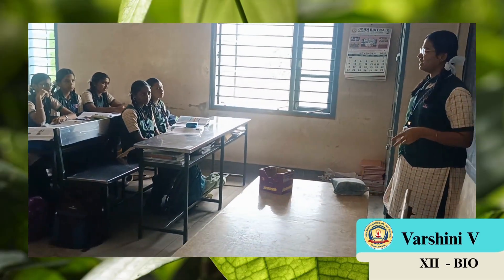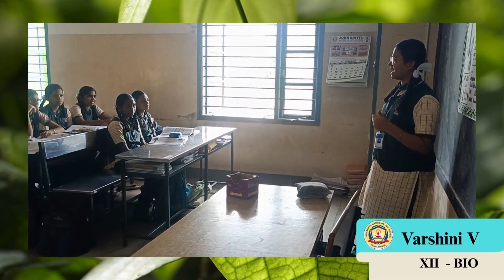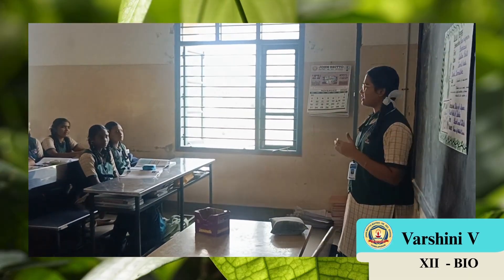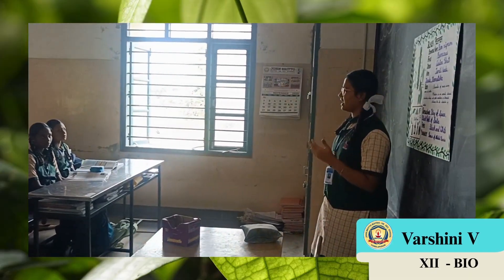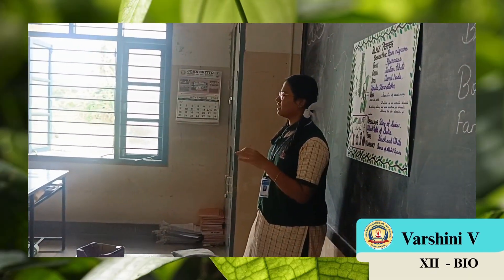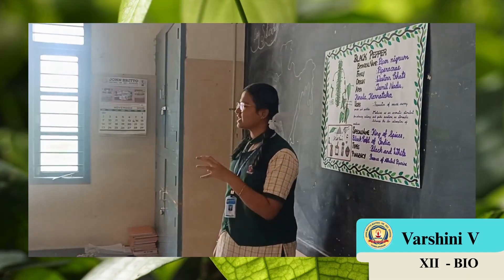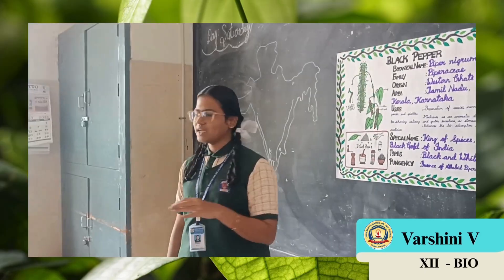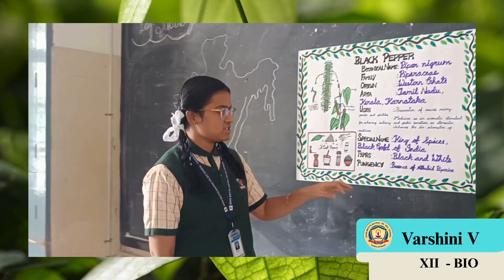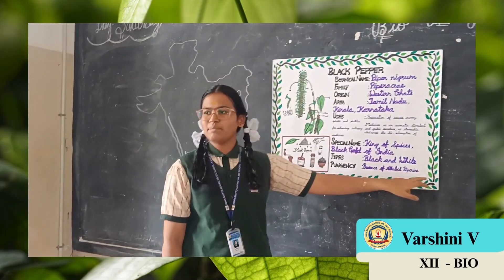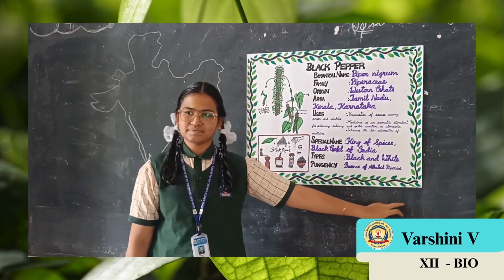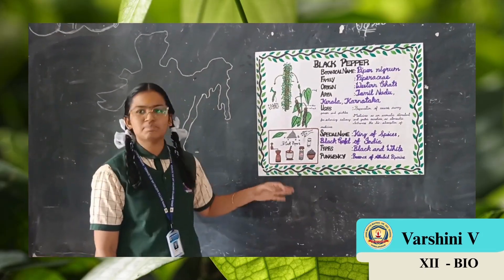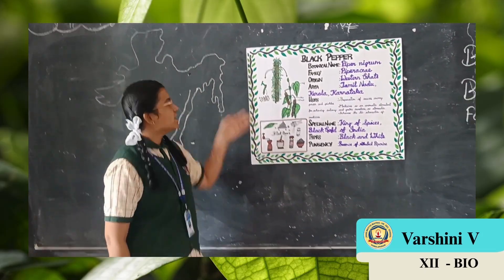There are two types of black pepper — they are black and white pepper. It gives a pungent taste because of an enzyme present in black pepper. The enzyme name is alkaloid piperine, so it gives a pungent taste.